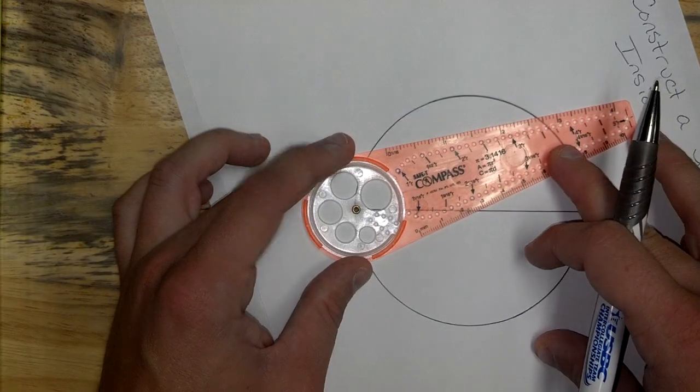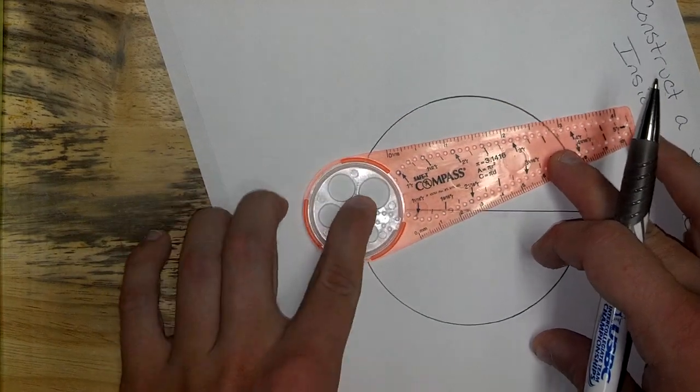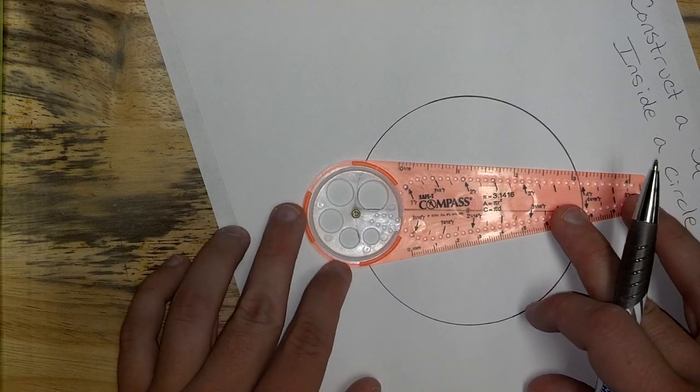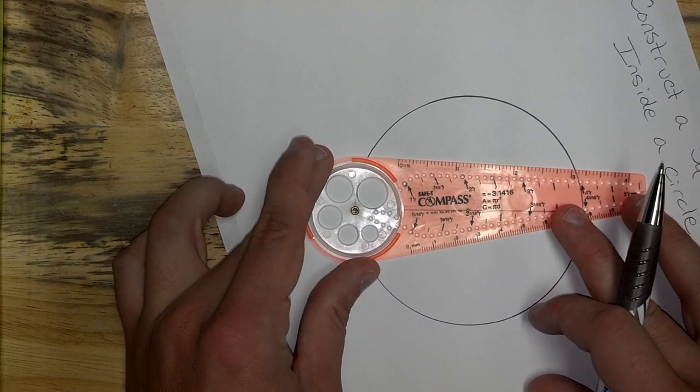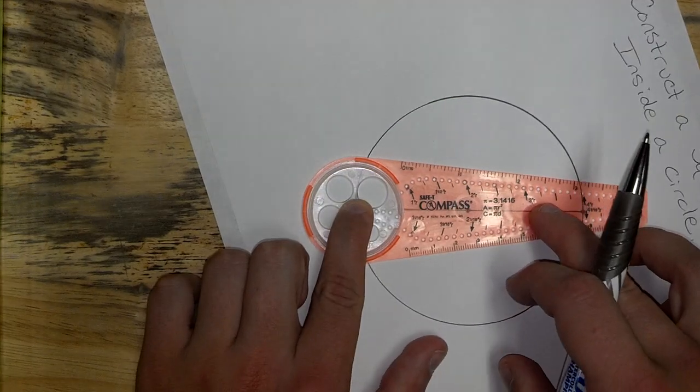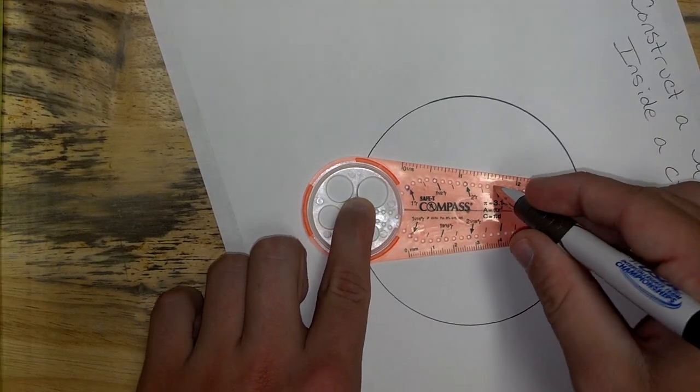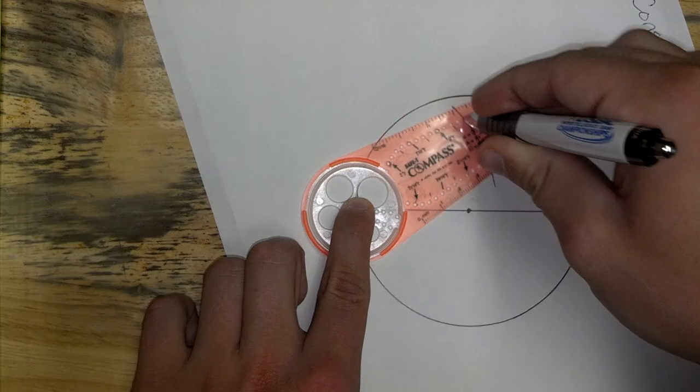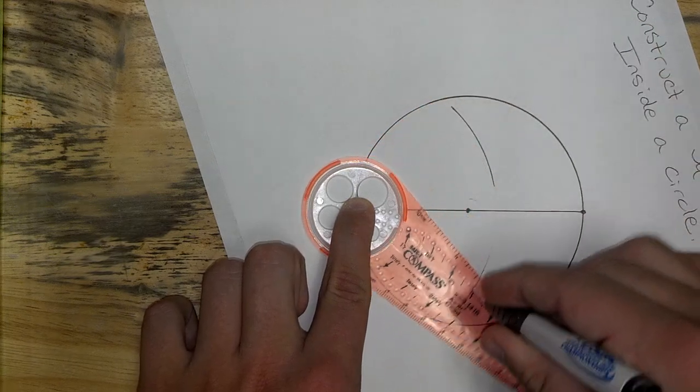Go ahead and do the bisector construction. Line up the brass ring with one of the endpoints on your circle. Go beyond halfway across your line segment that you're trying to chop in half, or bisect. And make a little arc above, a little arc below.